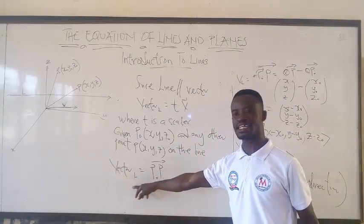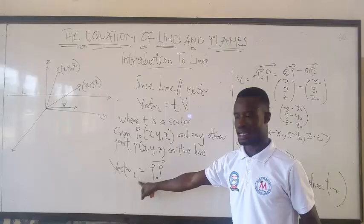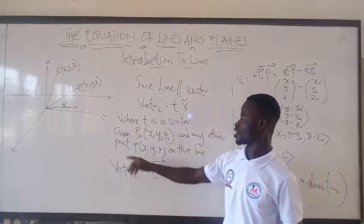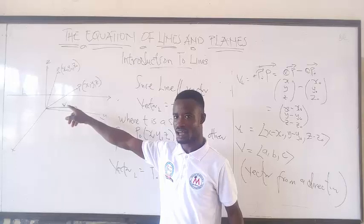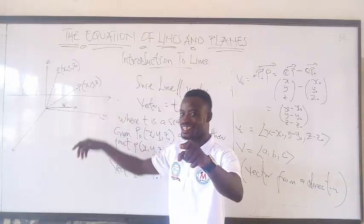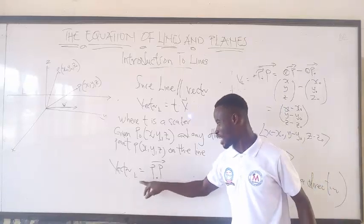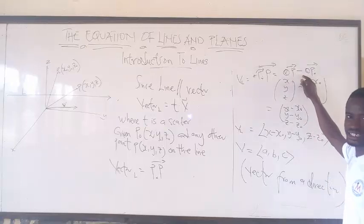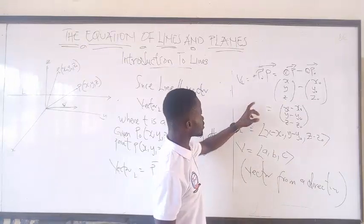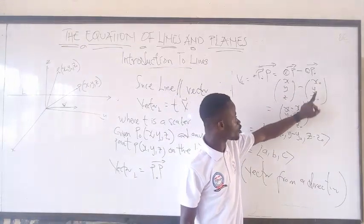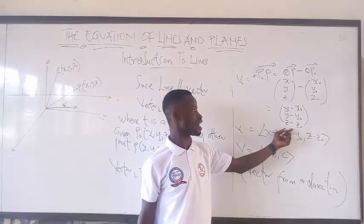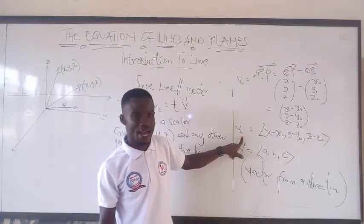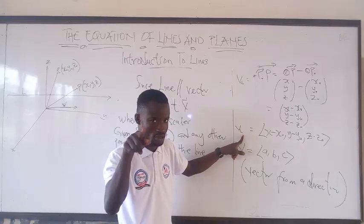We can see that the vector of the line — when will you get the vector of the line? That is when you take the final minus the initial. So the vector of the line is equal to the final minus the initial, and that is the position vector. We know P to be this, we know P-naught to be this, and when we subtract we get the vector of the line.